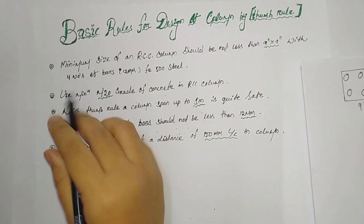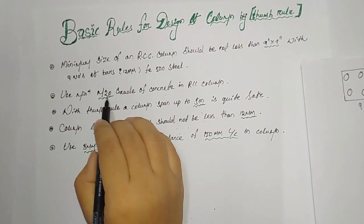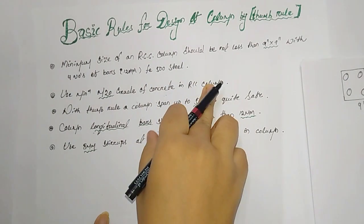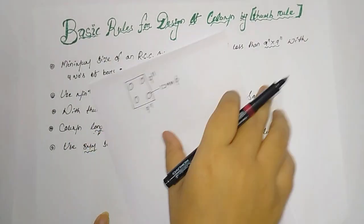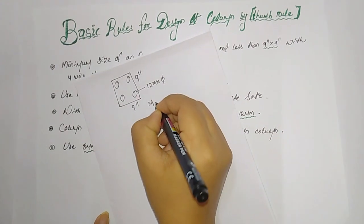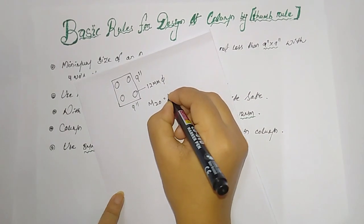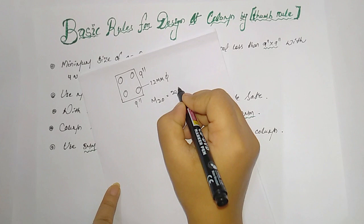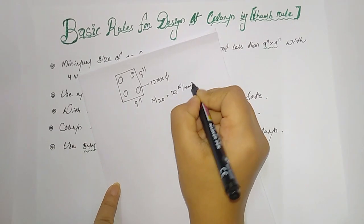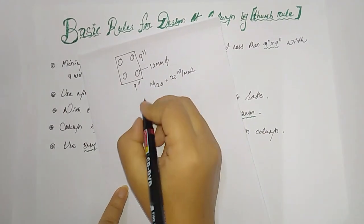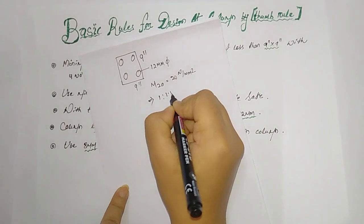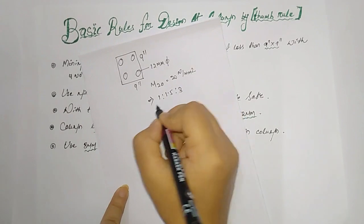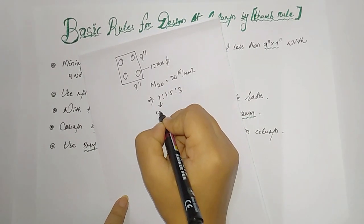Number two: use minimum M20 grade of concrete in RCC column, where M is mix and 20 is strength. Here, 20 is Newton per mm square, and the ratio is 1:1.5:3, where 1 is cement.